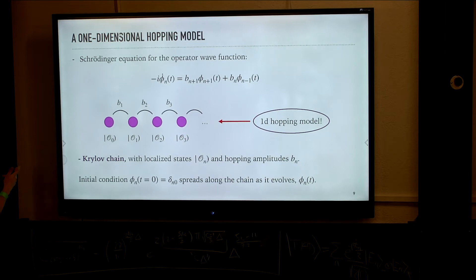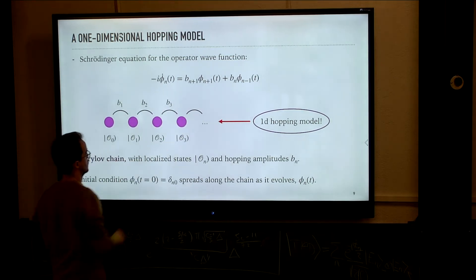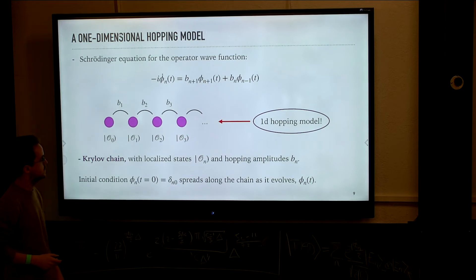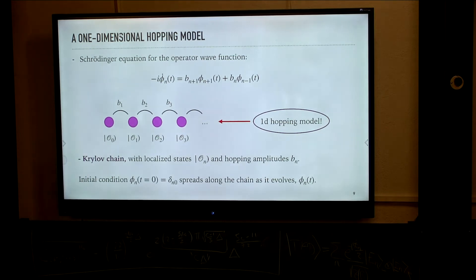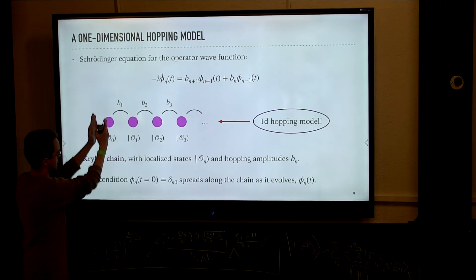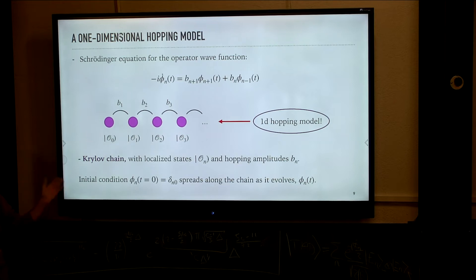This reduces the time evolution of the operator to a tight-binding hopping model in one dimension, where the differential equation governing the evolution of the wave function is a Schrödinger-like differential equation in which Lanczos coefficients appear as hopping amplitudes. The initial condition for time evolution is a localized state at the first Krylov element, because by construction the first Krylov element is just the initial condition itself.